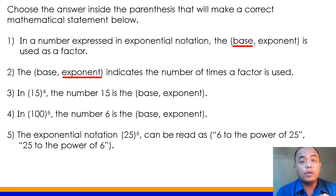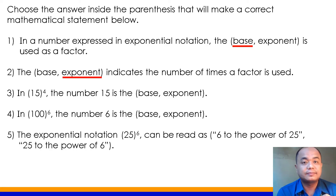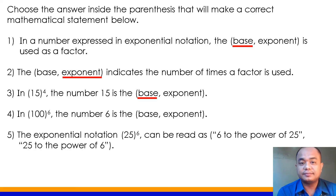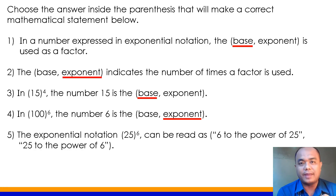Number 3: In 15 to the exponent 4, or 15 raised to 4, or 15 to the 4th power, the number 15 is the (base / exponent). Number 15 here is the base — 15 is used as factor. Kapag sinabi nating base, siya yung number na paulit-ulit na i-multiply. Number 4: In 100 to the exponent 6, the number 6 is the (base / exponent). The answer is exponent — 6 determines how many times the base, which is 100, is being multiplied repeatedly.